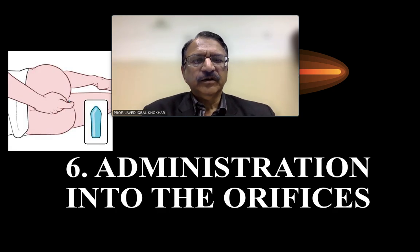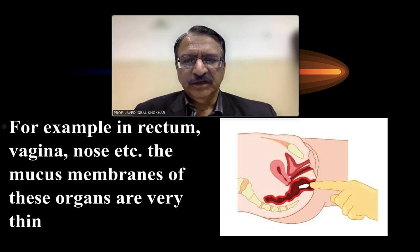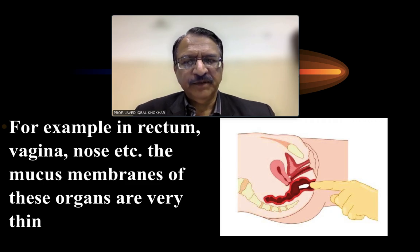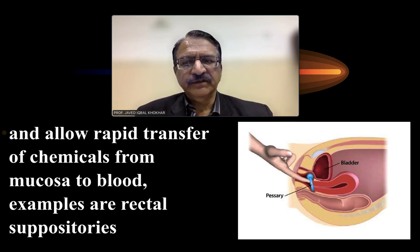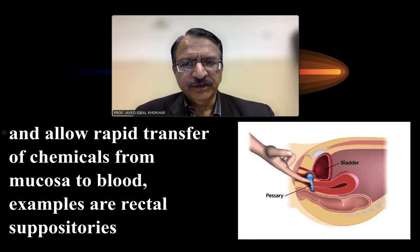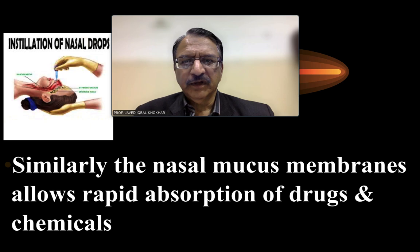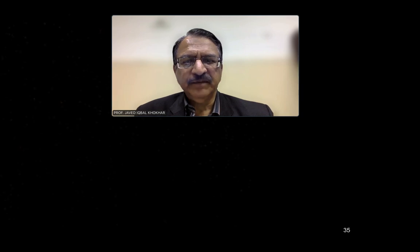Then the administration into the orifices — that means the rectum, the vagina, and the nose. The mucous membrane of these organs is very thin and the drugs can be absorbed. This allows rapid transfer of chemicals from mucosa to the blood, like the rectal suppository, which is the commonest example. Similarly, the nasal mucous membrane allows rapid absorption of drugs and chemicals. So these are the various routes of administration.